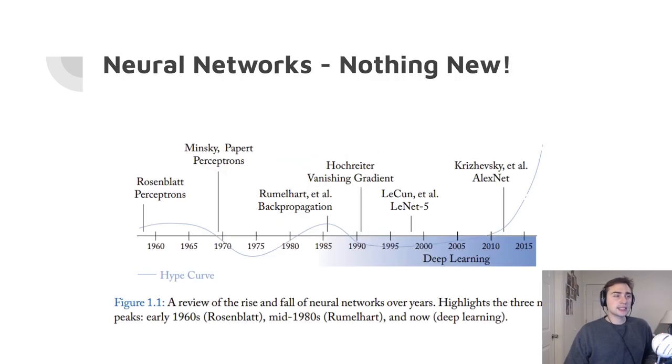But before we do any of this, let's give a history of neural networks in research. Neural networks is not really a new thing. Neural networks really came out and started their initial growth in popularity in the late 1950s with these Rosenblatt perceptrons. And here we've got this graph with the so-called hype curve, basically giving a rough estimate of the public perception or research perception on neural networks over time.